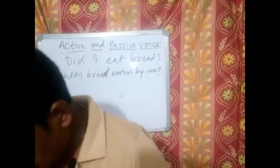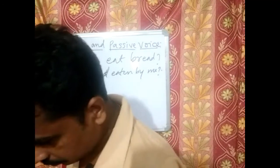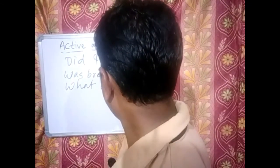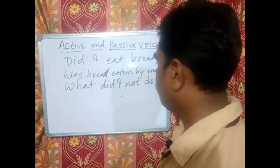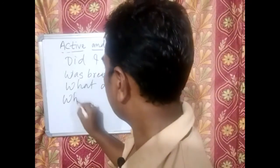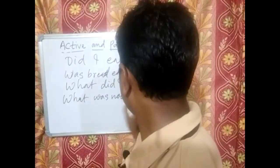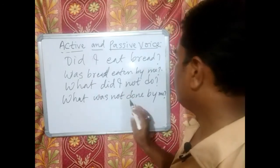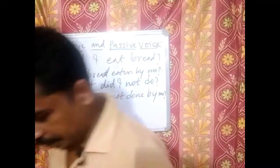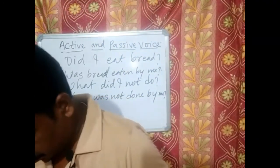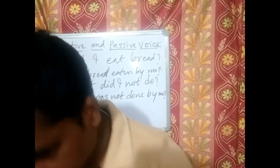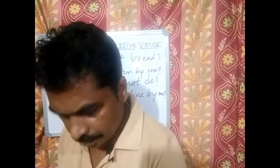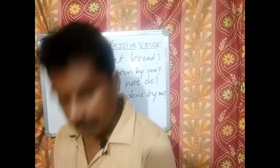If there is a sentence like 'What did I not do?' — this is a negative interrogative with a question word. The passive form is: What was not done by me? 'What' remains, 'did' gets replaced by 'was,' and 'not done by me' follows. The same arrangement applies for past continuous: 'Was I reading a book?' becomes 'Was a book being read by me?' And 'Was I not reading a book?' becomes 'Was a book not being read by me?'